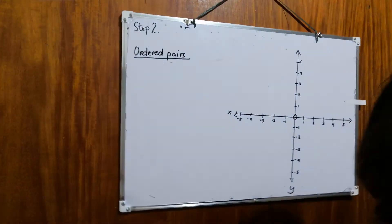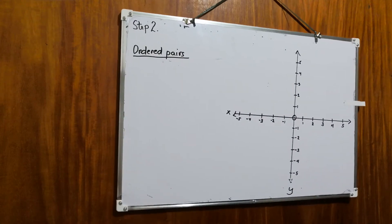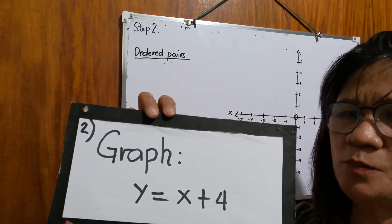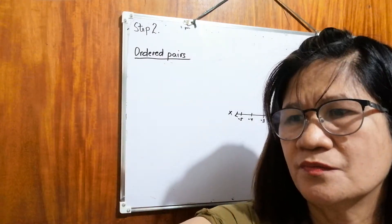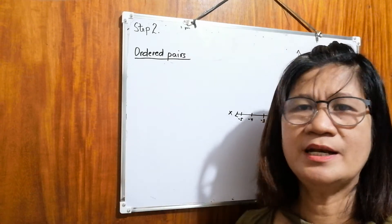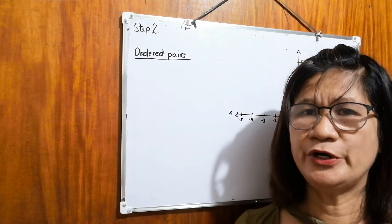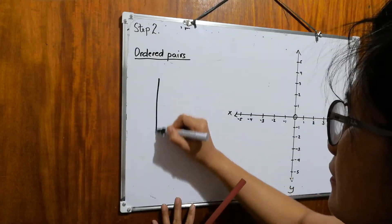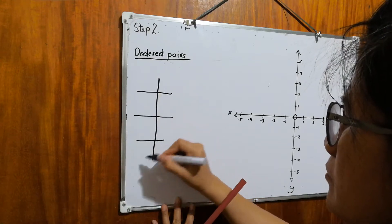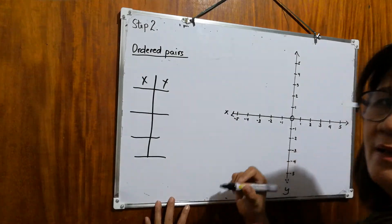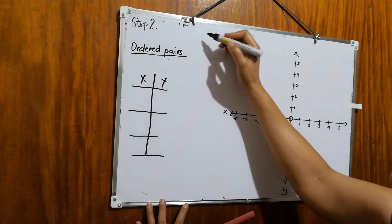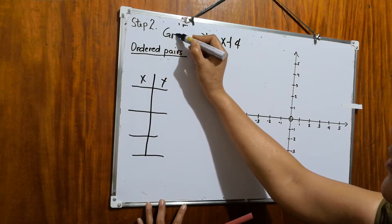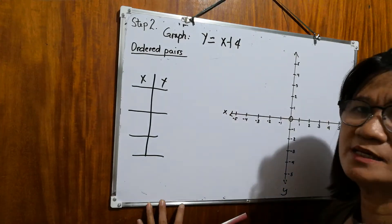Let's take another example. Graph y equals x plus 4. Again, graph y equals x plus 4. So as usual, before we can graph, we need to first determine at least three ordered pairs. We will assign. We'll use a table for the value of x and for the value of y. Our equation is y equals x plus 4.